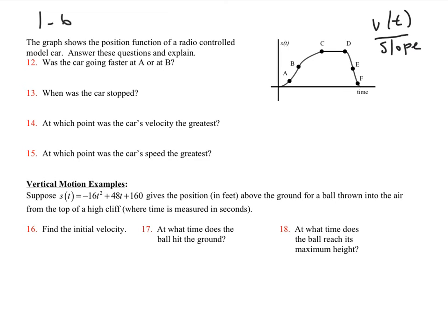Okay, was the car going faster at A or B? Well, that's when we need to look at the slope. So if I look at the slope here, and I look at the slope here, which one would be steeper? I think that you can see that it's going to be at B. It's a greater slope. And then how about 13? When was the car stopped?